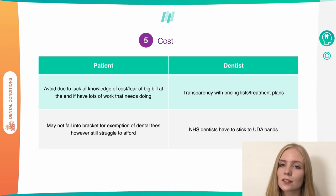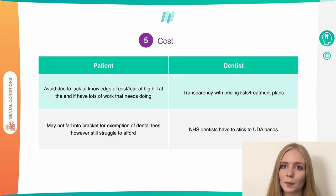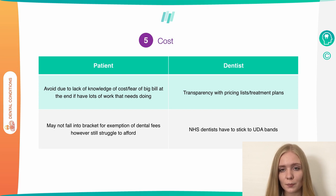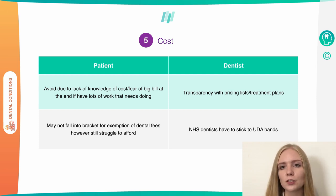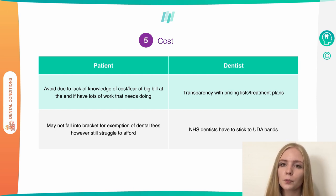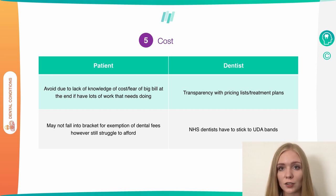Another barrier to the access of oral care is cost. From a patient's perspective, this could be that they can't afford treatment, or that they're scared of going to the dentist for fear of getting a large bill they can't pay. Furthermore, a patient might fall into the bracket of not being exempt from dental fees despite being on the threshold — they might not be able to afford the fees but are not exempt, so they choose not to go. From the dentist's perspective, it's important to have transparency with pricing and treatment plans, clearly explaining what things will cost, so there are no unexpected bills.